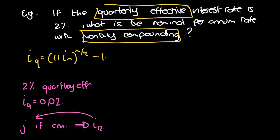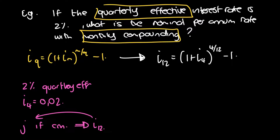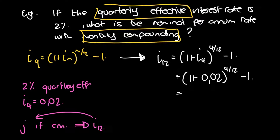To find I12, we use the formula: I12 equals 1 plus I4, to the power of 4 over 12, minus 1. Substituting: 1 plus 0.02, to the power of 4 divided by 12, minus 1. Putting that into our calculator gives 0.006622 et cetera.